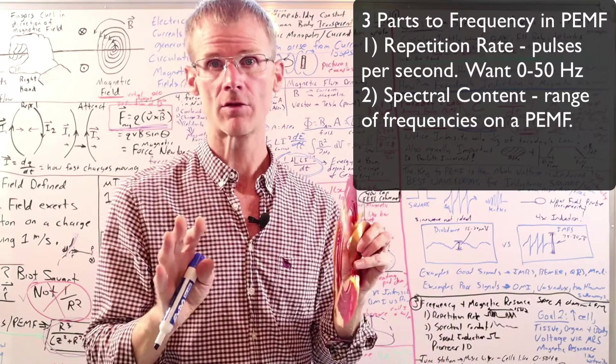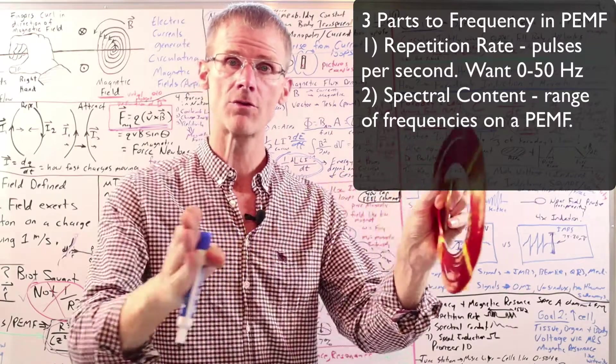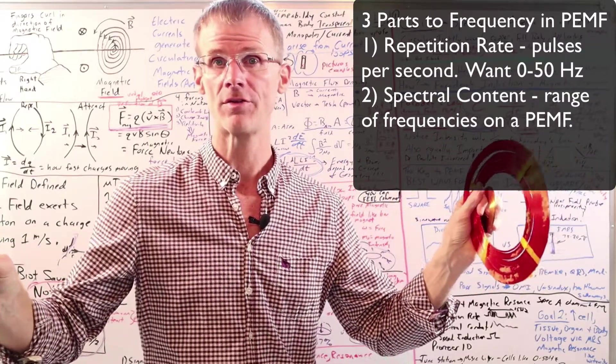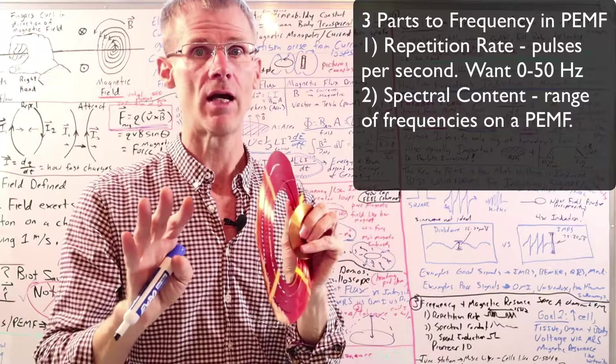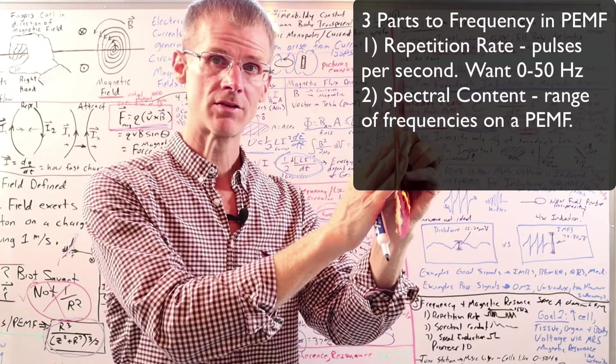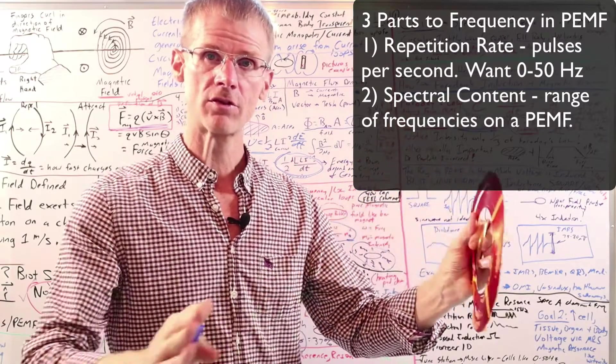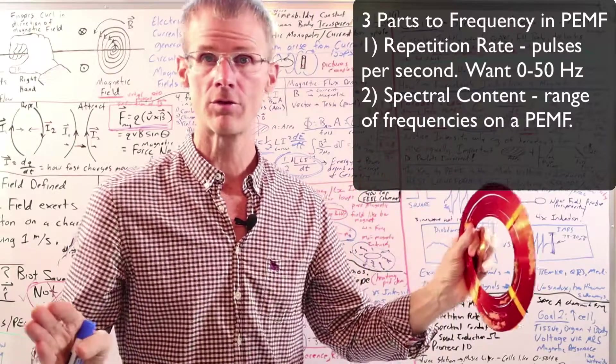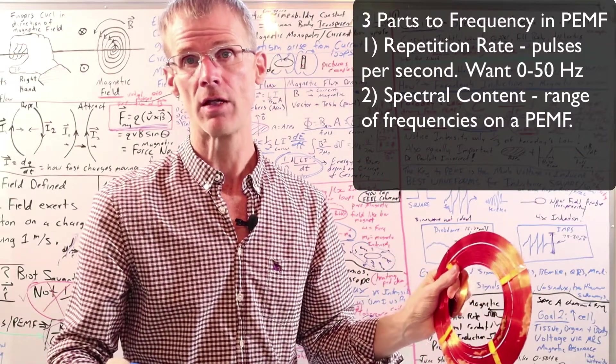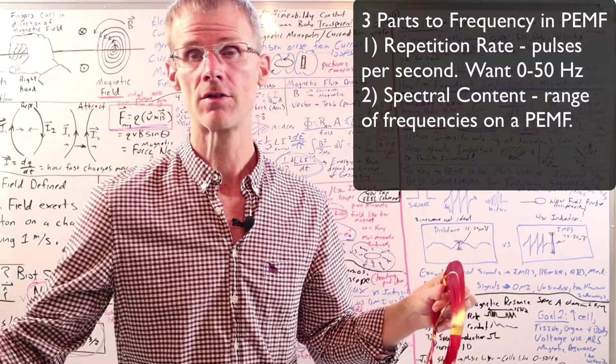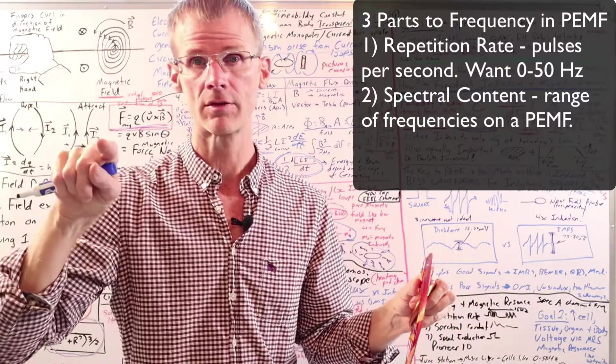The next component to frequency is the spectral content. And this we'll see on a spectrum analyzer. That's going to show you the range of frequencies that are present in a good PEMF system. And really good systems like the IMRS and Beamer, as one independent study showed, they had the best frequency spectrum. Just a very broad spectrum of frequencies that blankets the biologically active range and includes higher frequencies for the sharp edges for inductive effects.